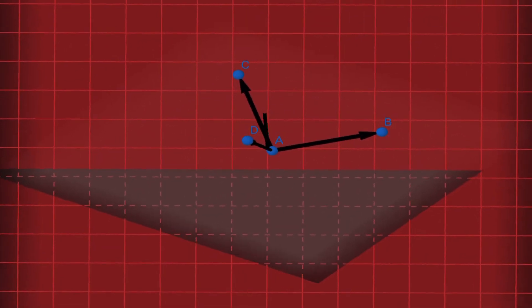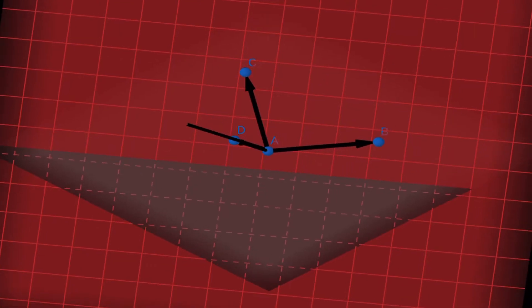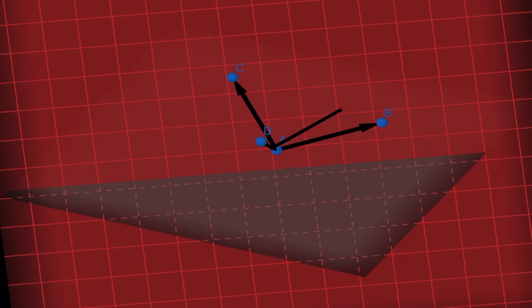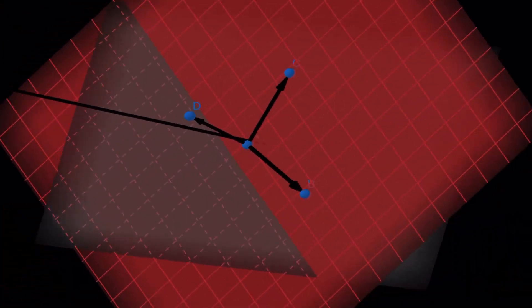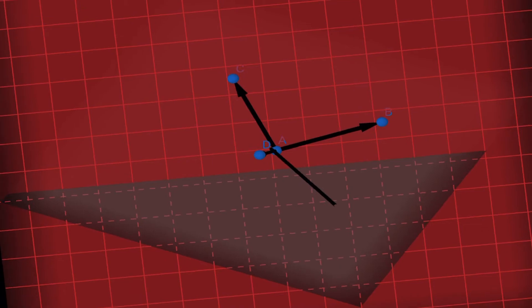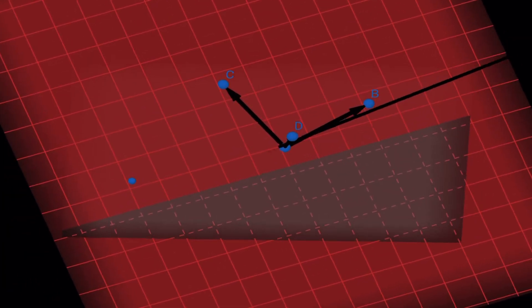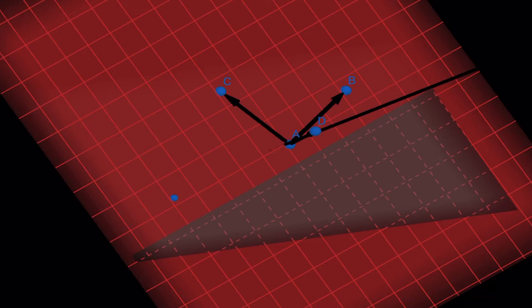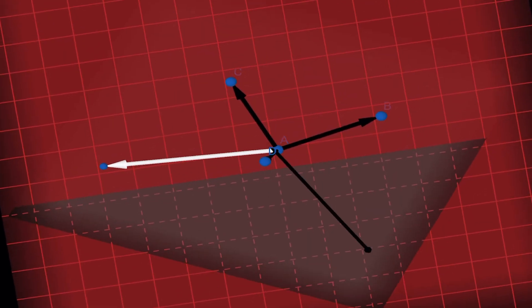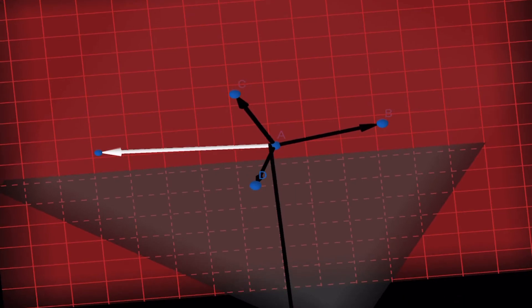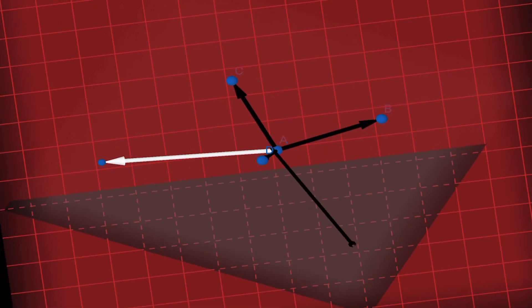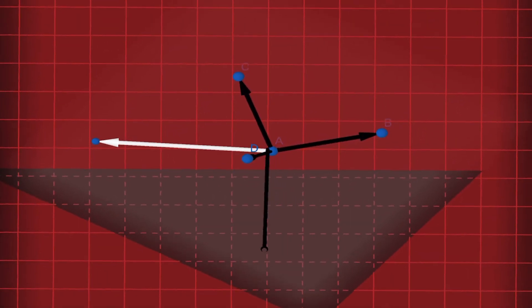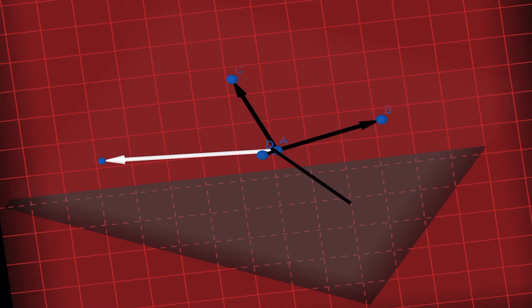If that normal is perpendicular to AD, that would mean that point D is on the plane, in which case the dot product of the normal with AD would be zero. If the dot product of the normal with AD is non-zero, then point D must be off the plane. To help you with this, consider a point on the plane, let's say E. Connect up a vector going from A to E. Notice the angle between AE and the normal is 90 degrees, so the dot product will be zero. If your dot product is zero, the point is on the plane; if it's non-zero, the point is off the plane.